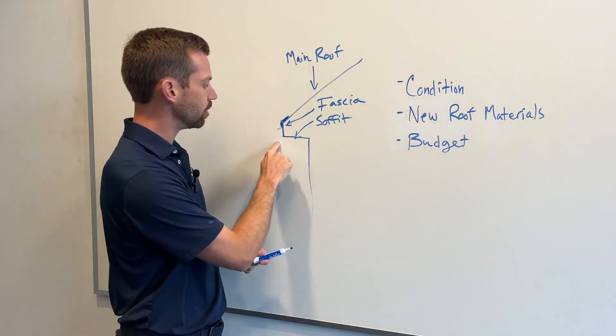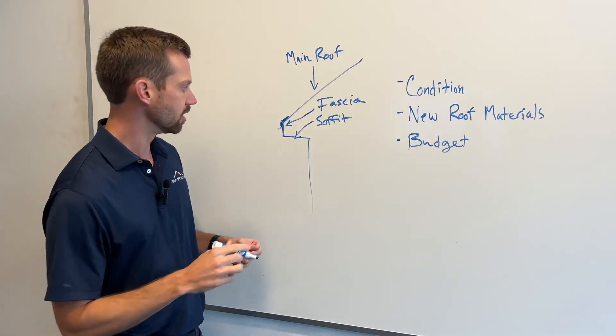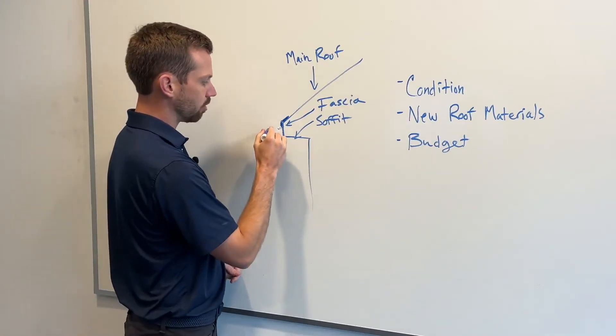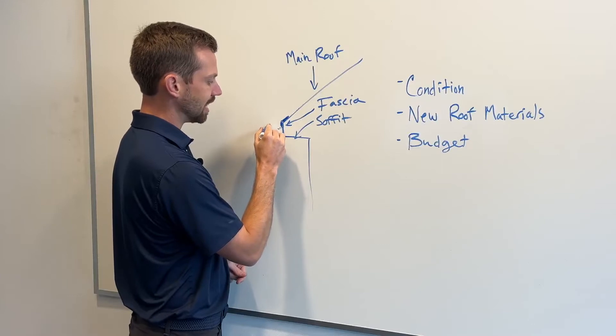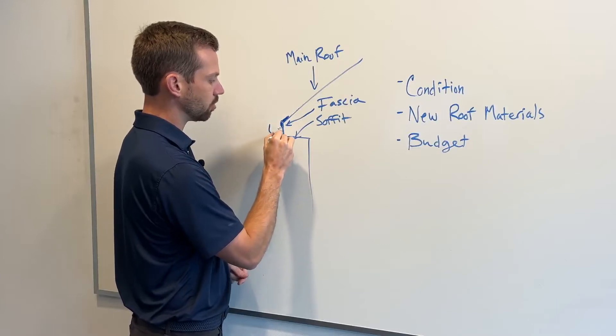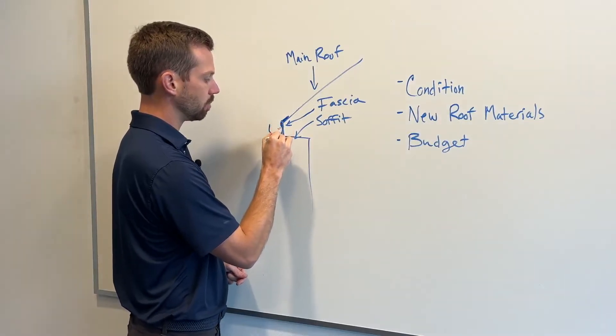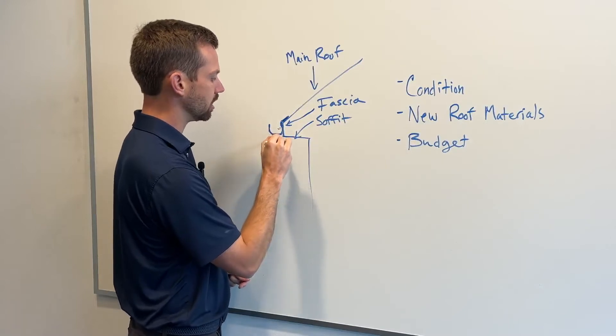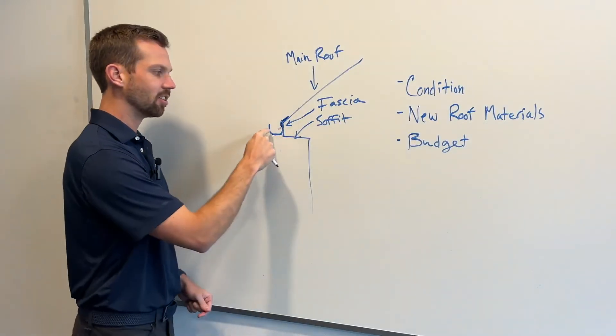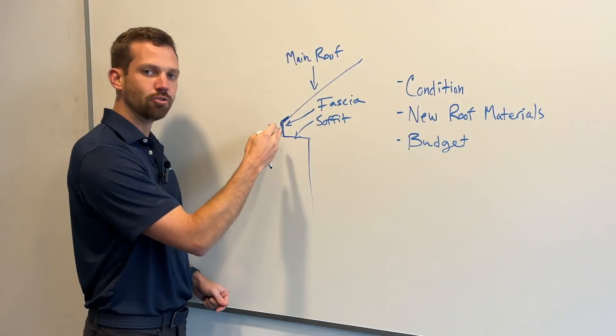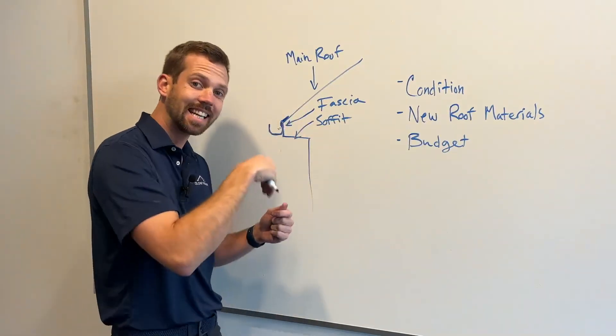And as you can tell, if we introduce gutters to this situation, that drip edge, in order for it to operate effectively, needs to actually sit in the gutter. Okay. So I'm going to draw, this is a terrible picture. You probably think I look like a kindergartner drawing this, but nonetheless, the gutter needs to sit behind the drip edge or the drip edge needs to sit in the gutter.